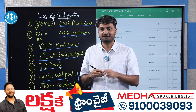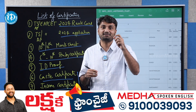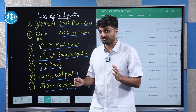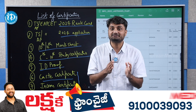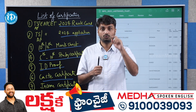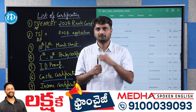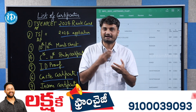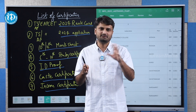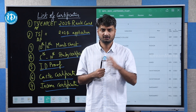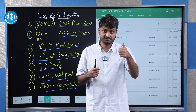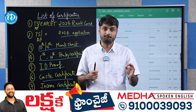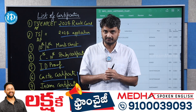Many students have missed important documents for counseling. Especially the caste certificate and income certificate — you have to apply for the latest versions. Many students need to check their reservation category carefully. If you belong to a BC, BCC, or BCCC category, you must have the correct certificate. The latest certificate is very important and compulsory.